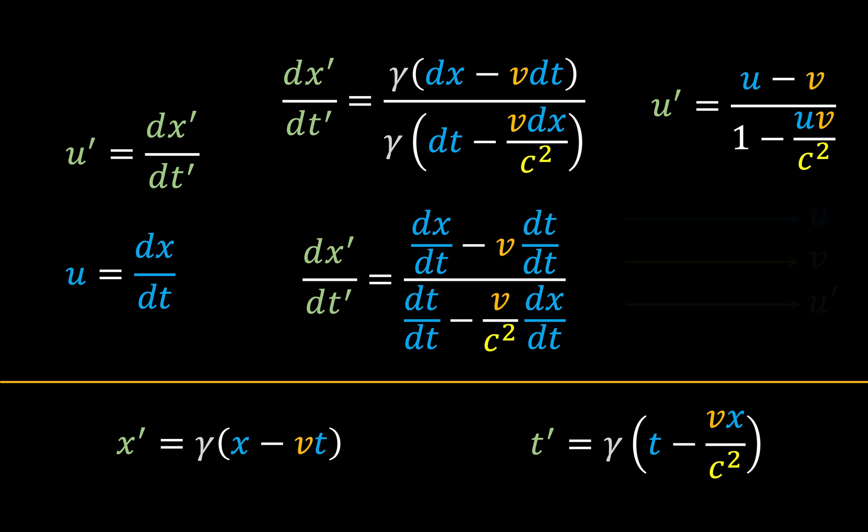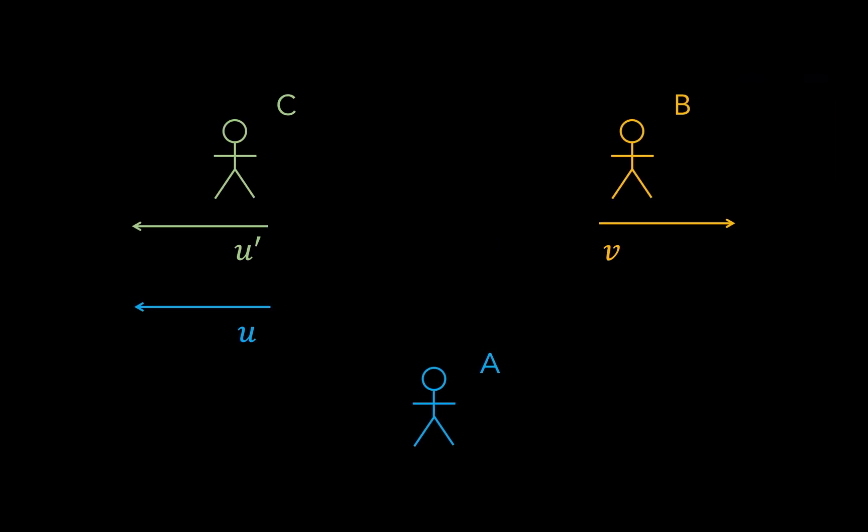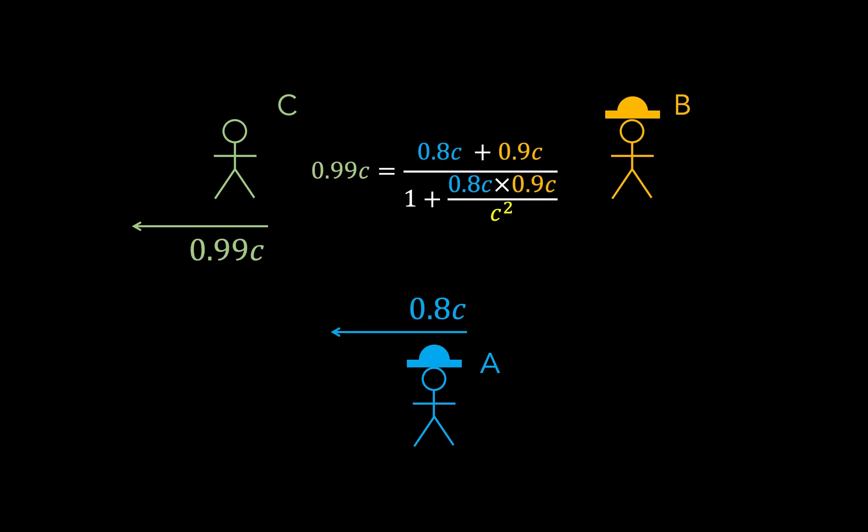Now this expression is valid when we measure u, v, and u' along the same axis. However, if we take v to be the speed of the observer in the opposite direction to u, then we just have to minus the v terms to get our final velocity addition equation here. So using this, we can see that the speed of our third observer is not 1.7C, but 0.99C.